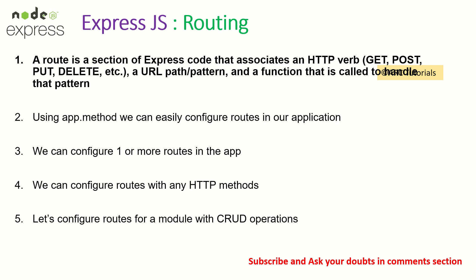We'll see that in action in just a bit. In ExpressJS, we define it by saying app.method — method being your HTTP method like post, get, put, delete. We can configure any number of routes in our application, and we can configure routes with any HTTP method any number of times.